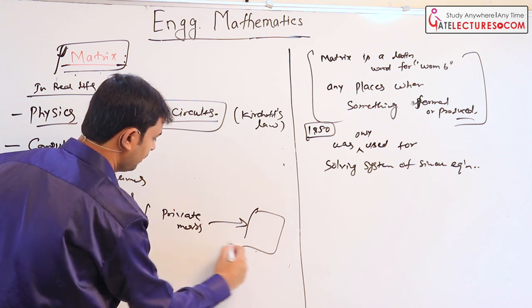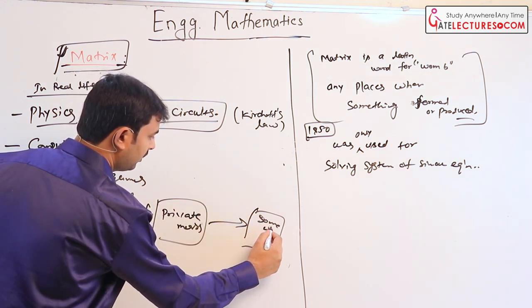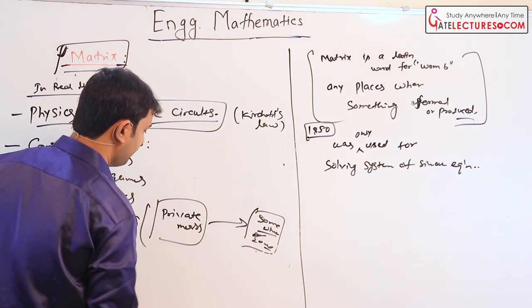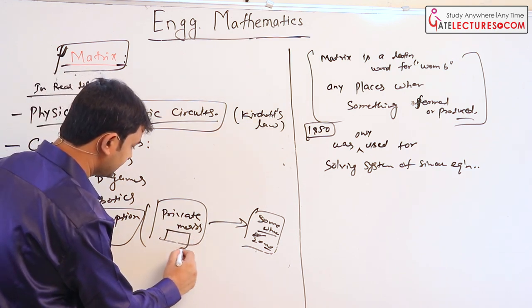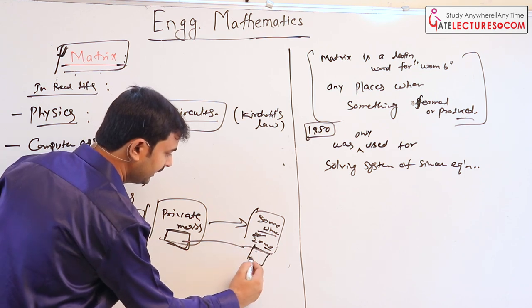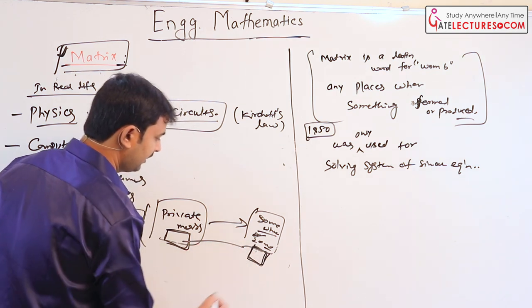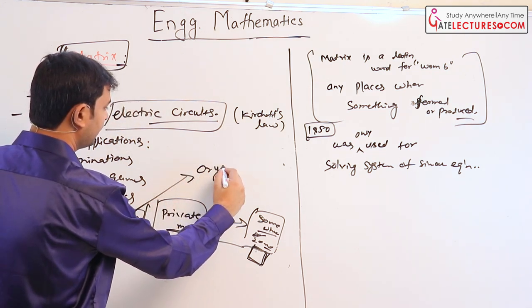Also in encryption. Encryption means if you want to send a private message to somewhere, to someone, matrices are used for decoding this private message. You encode the message and here he or she will decrypt the message. The matrices are also used in encryption, means in cryptography.